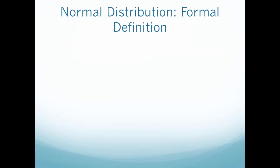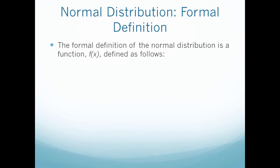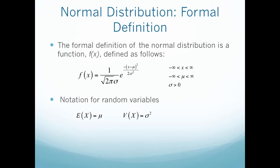The normal distribution is a function of the expected value, or the mean, which is μ, and the variance, σ squared. So then we have the formal definition of the normal distribution, which is a function f(x), which is defined as follows. So we have this big equation: f(x) equals 1 over the square root of 2π, times σ, all times e to the negative (x minus μ) quantity squared, divided by 2σ squared. So this is on the range from negative infinity to infinity, and where μ is also evaluated from negative infinity to infinity. Also we have the notation for my random variables, so we say E(x), my random variable equals μ, so that's my expected value equals μ, and my variance, V(x) equals σ squared.